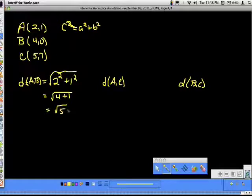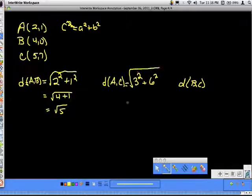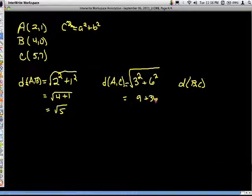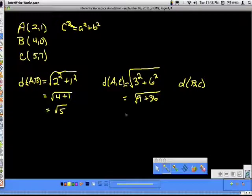Do the same here with our shortcut. Change in X, change in Y. So from A to C, the X's go from 2 to 5, that's a change of 3, square it. The Y's, from 1 to 7, that's a change of 6, square that. Find the sum and find the square root. 3 squared is 9, 6 squared is 36, and then find the square root of that, which is square root of 45.